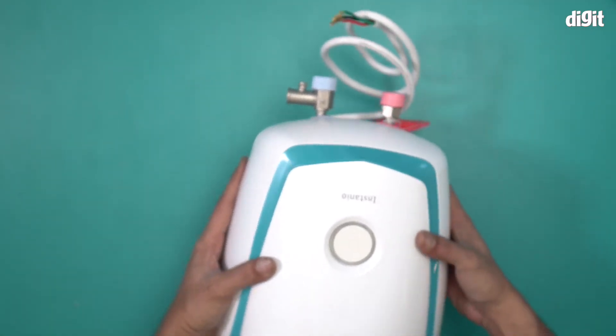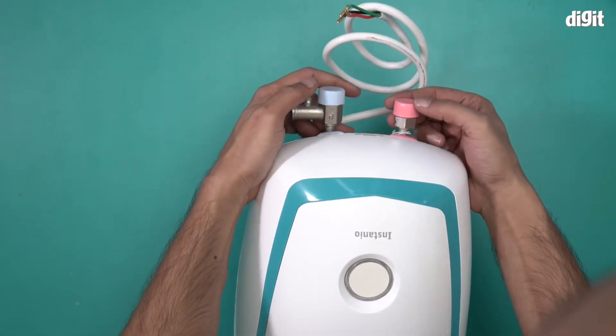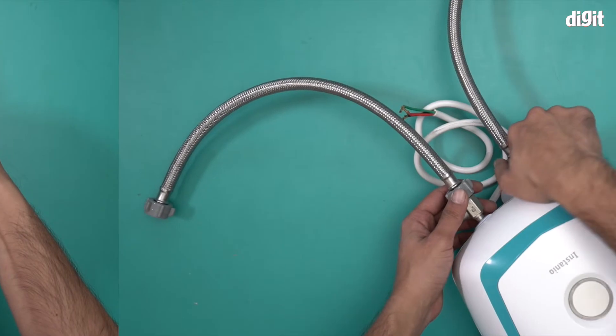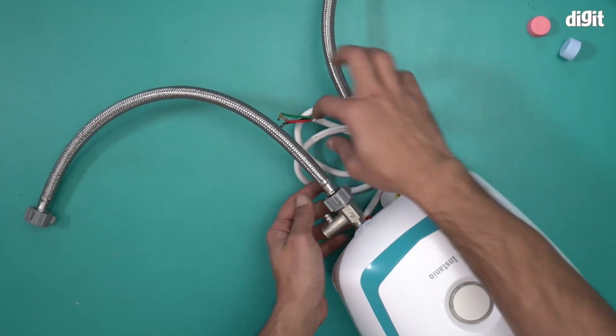Over here we have the outlet and inlet valves. This is pipe number one and pipe number two.